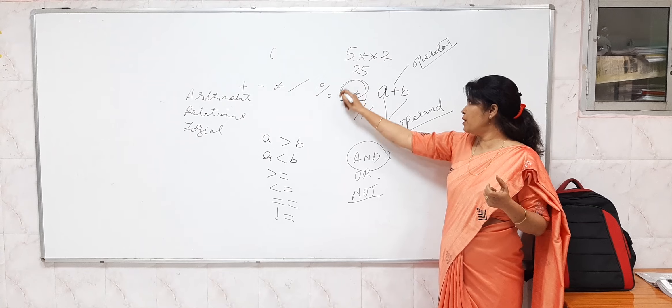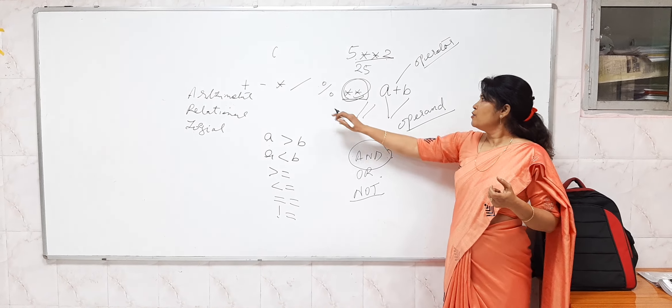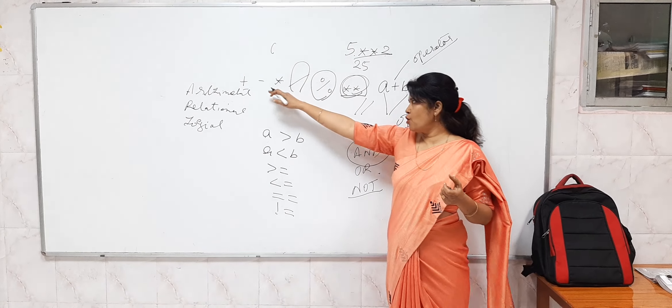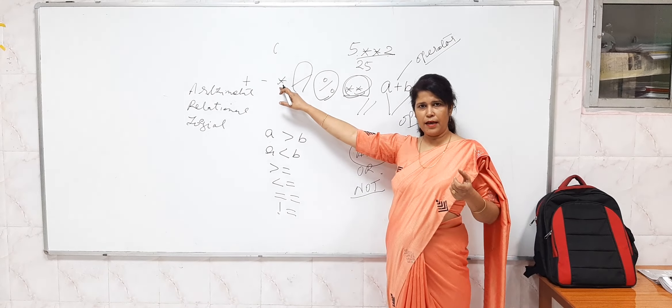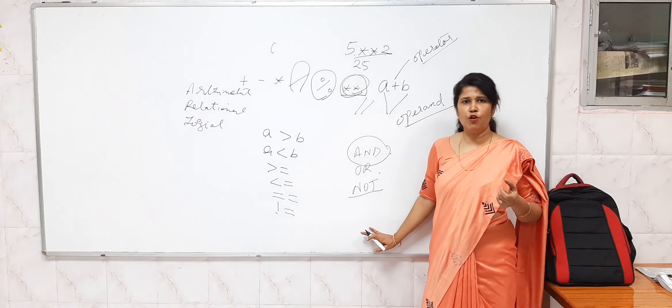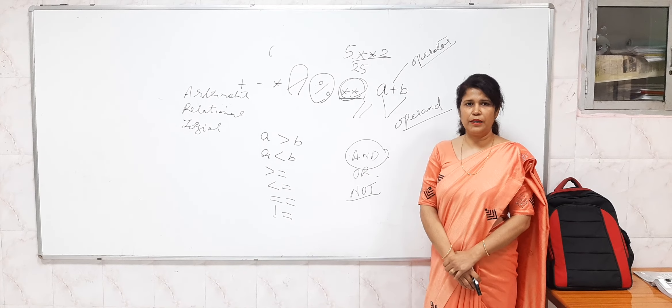You have to be very careful. Double asterisk is for exponent. Modulus gives you the remainder, floor division gives you the quotient. You all know what plus, minus, and asterisk are. Then we have relational operators and logical operators. That's all for today's class on the different operators in Python.